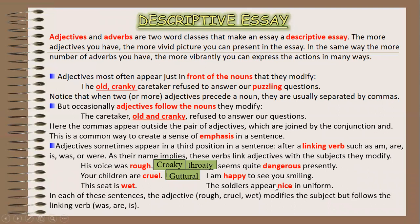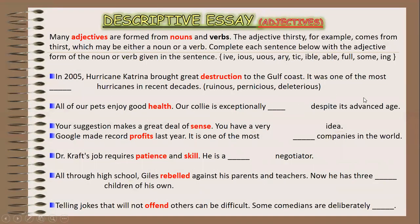Here is another example for descriptive essay adjectives. Many adjectives are formed from nouns and verbs. For example, the adjective 'thirsty' comes from 'thirst,' which may be either a noun or a verb. Common suffixes used to form adjectives include: -ious, -ary, -tic, -ive, -le, -ful, -some, -ing. These suffixes help you identify and form adjectives from other word classes.